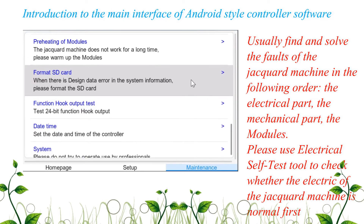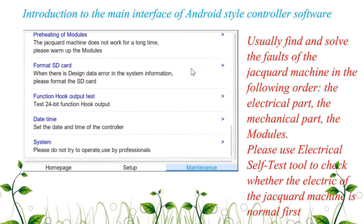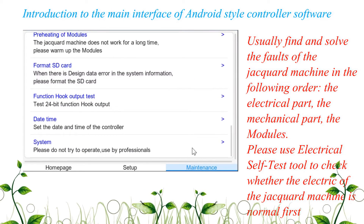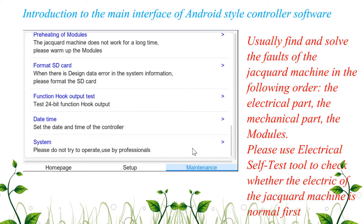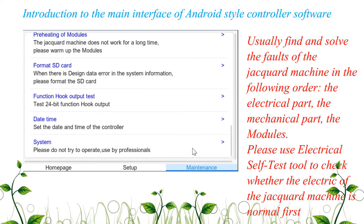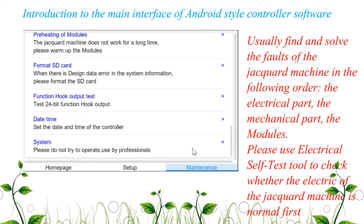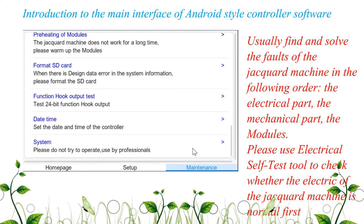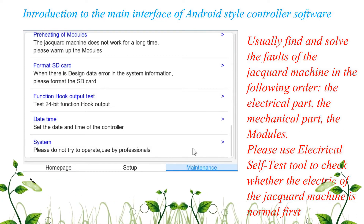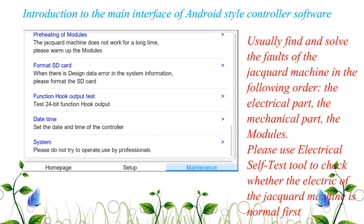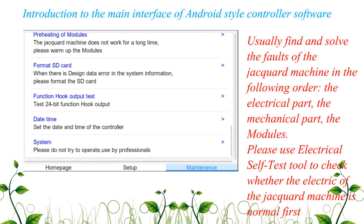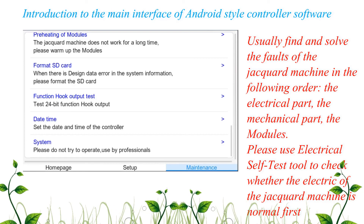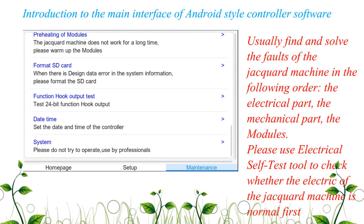Usually find and solve the faults of the Jacquard machine in the following order: the electrical part, the mechanical part, then the modules. Please use the electrical self test tool to check whether the electrics of the Jacquard machine are normal first.